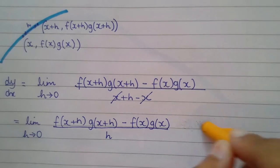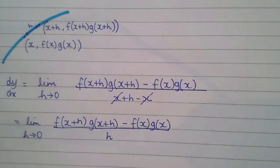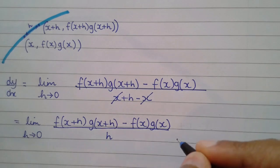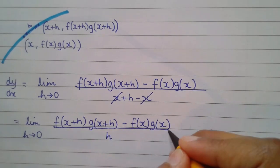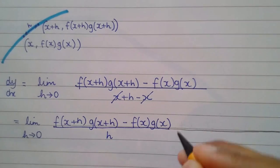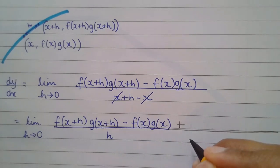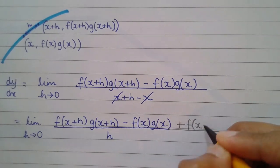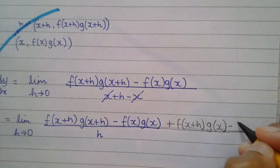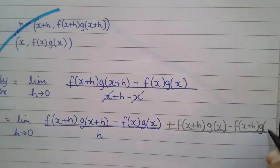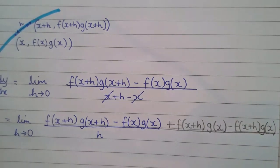So what we're going to do is we're going to add and subtract the same component to this whole expression. So I'm going to extend it now, which means it's all over h. So I'm going to add f of x plus h g of x, and I'm going to subtract the same thing. Now there's a reason why this particular expression has been taken rather than anything else, and that's got something to do with the factors.